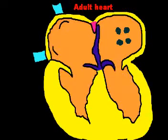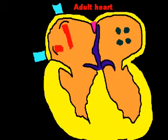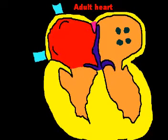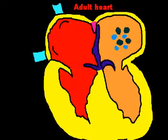The foramen ovale closes up at birth so that blood now runs from the right atrium to the right ventricle.